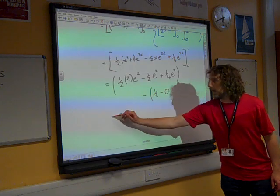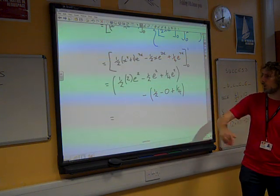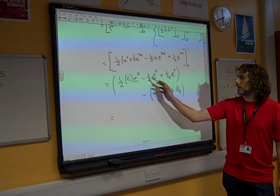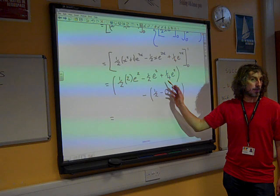There we are. And so carefully collecting things together, what have we got there? We've got 1, take away a half, plus a quarter times e squared. That's 3 quarters.